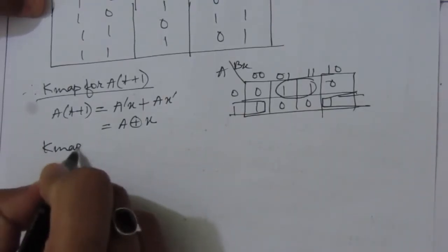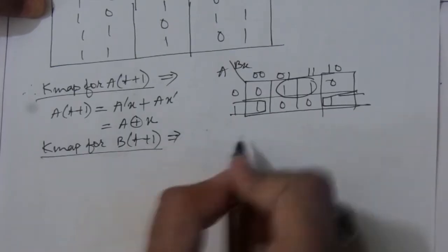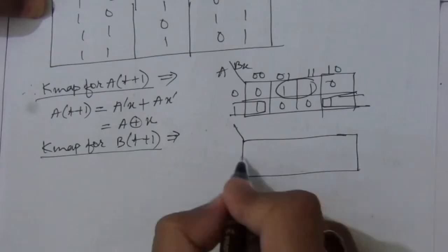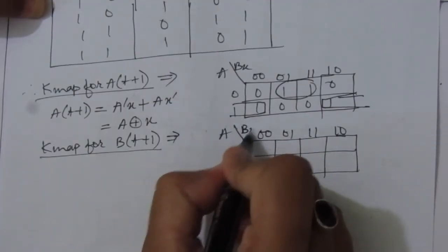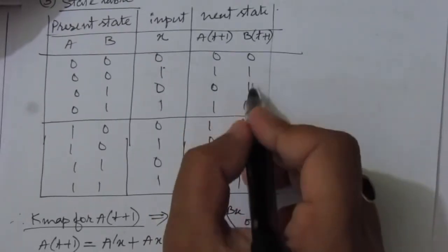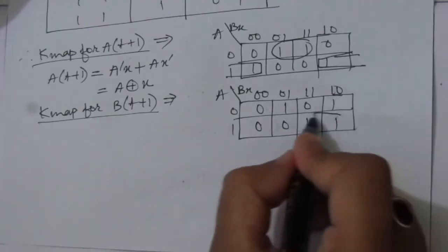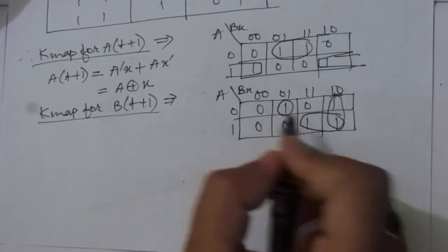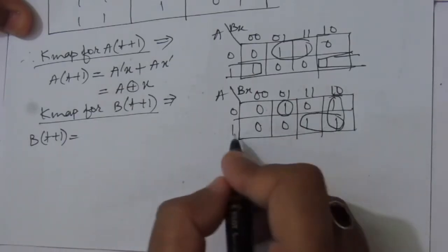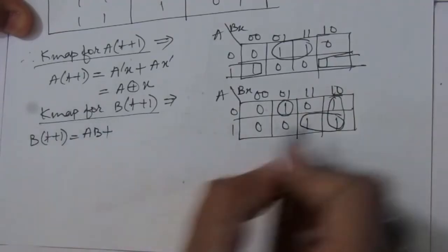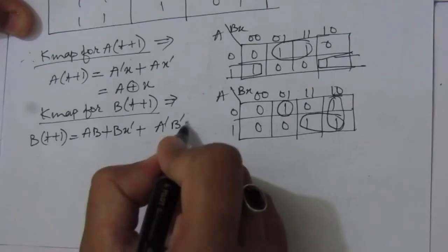Now the K-map for B(t+1) in Part B. Filling the three-variable K-map with the B(t+1) values and grouping, we identify three combinations: B(t+1) = AB + BX̄ + ĀB̄X.